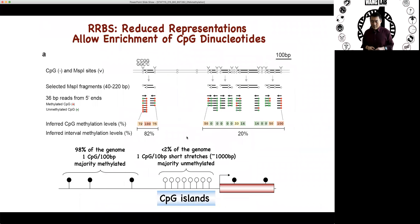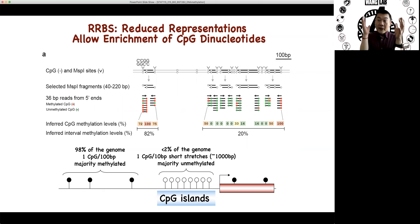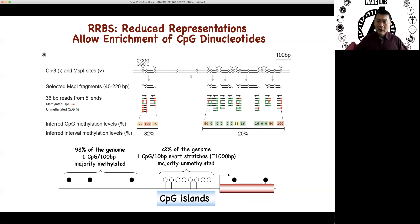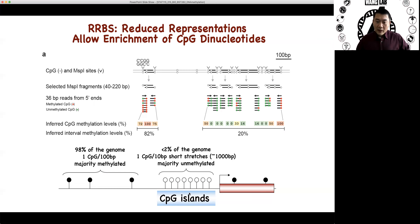So one way to combat this is through a protocol called reduced representation bisulfate sequencing. You're still doing bisulfate sequencing, but you try to enrich regions where there are a lot of CPGs. So what you do is digest your genome using enzymes that recognize high CG count motifs like MSP1, which recognizes CCGG. You get these fragments and only select a specific range of fragment size. Regions with low CPG density get thrown out, and you focus on regions with high CPG density — these are usually the CPG islands and promoters. As a result, you don't sequence the whole genome, but you sequence a fraction of it, and your per-CPG cost is going to be much, much better. This is the advantage of reduced representation bisulfate sequencing.